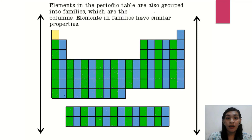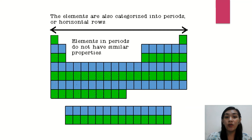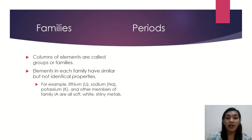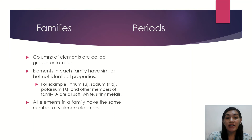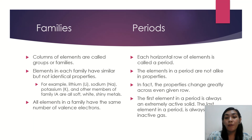Elements in the periodic table are also grouped into families, which are the columns. Elements in families have similar properties. Elements are also categorized into periods, or horizontal rows — they don't have similar properties, but they have a periodic pattern of characteristics. Elements in each family have similar but not identical properties, and all elements in a family have the same number of valence electrons. The group number tells you the number of valence electrons. For periods, the properties change greatly across each given row — the first element is always an extremely active solid while the last is always an inactive gas.